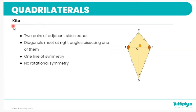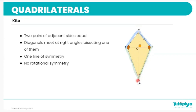The final quadrilateral is a kite. In a kite, we have two pairs of adjacent sides that are equal. The first pair of adjacent sides is A–Z and C–B, and the second pair is A–D and B–D, both equal in length. The diagonals of a kite bisect each other at right angles. It has one line of symmetry at the center — line CD — but no rotational symmetry.